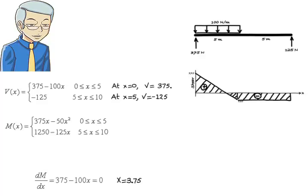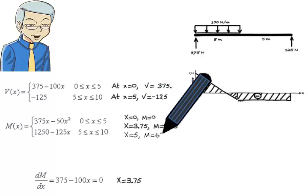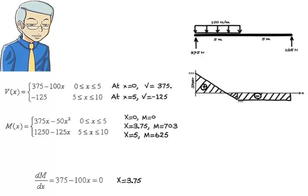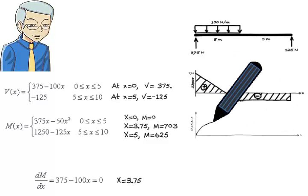That is, moment is maximum at x equals 3.75. So now we have three points for graphing the moment equation. At x equals 0, we have m equals 0. At x equals 3.75, we have m equals 703. And at x equals 5, m equals 625.